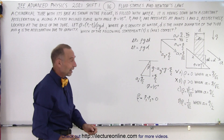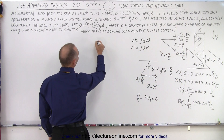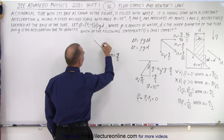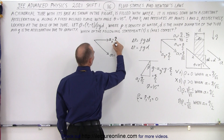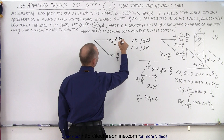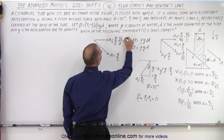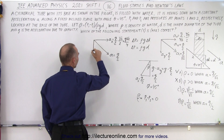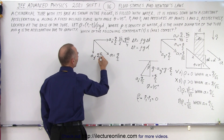Now for the other half: let a equal g divided by 2. Drawing the triangle again with a equal to g/2, the x-component a_x equals g over 2 times the square root of 2 over 2, which equals g times the square root of 2 over 4. And the y-component a_y is equally g times the square root of 2 over 4.